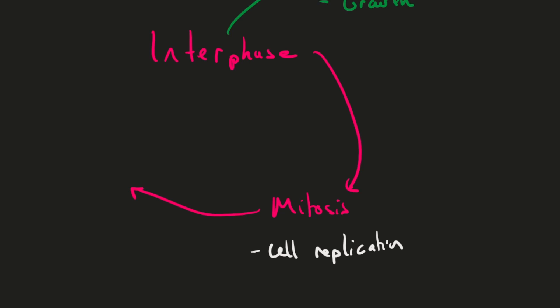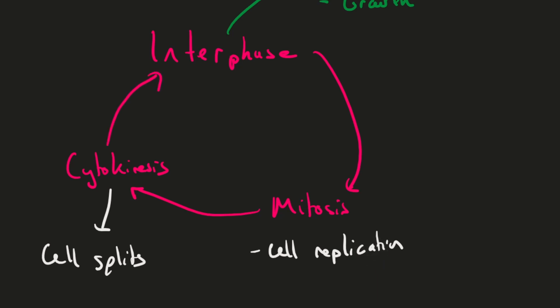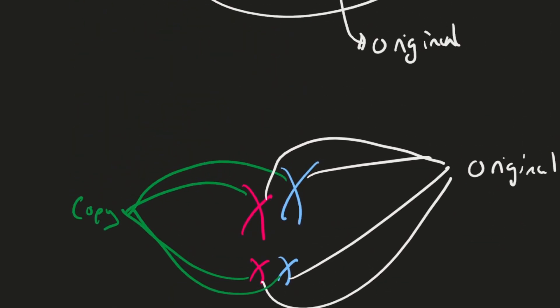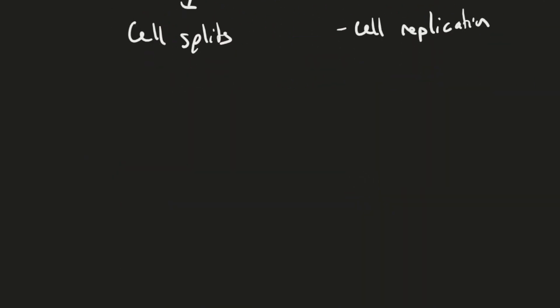The last stage after mitosis, once you have your two daughter cells and the cell actually splits, is called cytokinesis. That final stage is where the cell is splitting — when the membrane and the cytoplasm pinch in and divide. Once that's done you have two fully formed cells with new nuclei being formed, and then it goes back into the interphase stage, continuing the cycle. We need to be aware of all the phases in the cell cycle and how mitosis works.